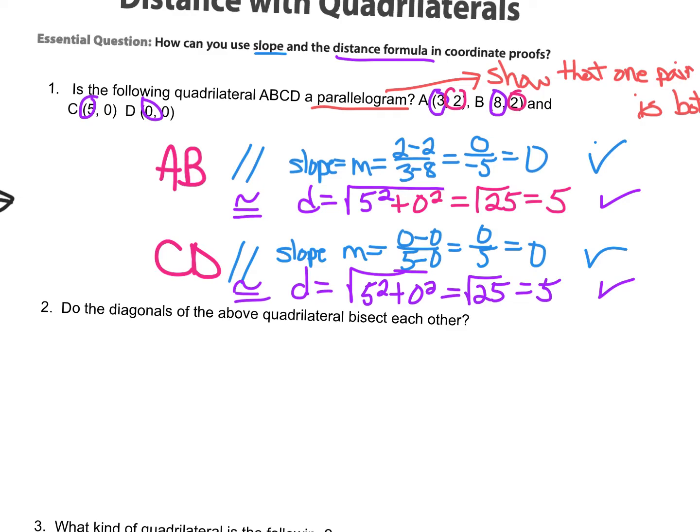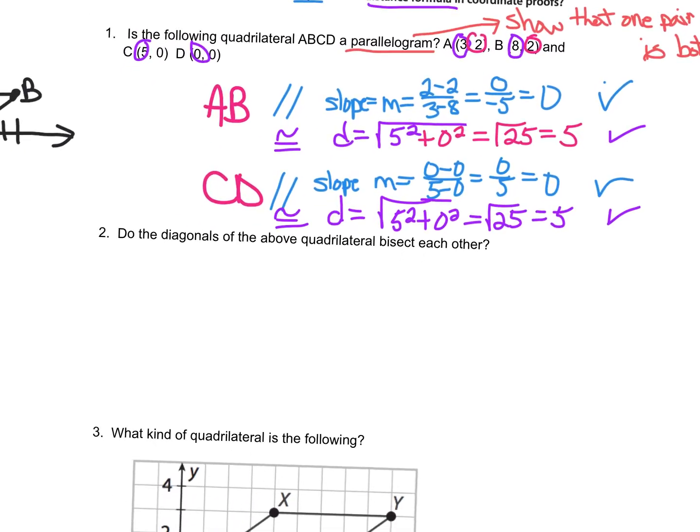Here, the distance between these two X's is 5, and those Y's is 0. And we can see that we're getting the same thing. So check, they are both congruent. Check, they are both parallel. So yes, that is a parallelogram.